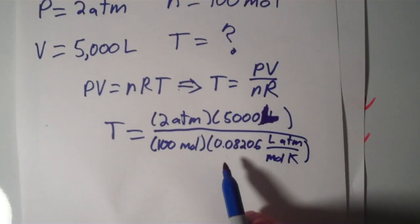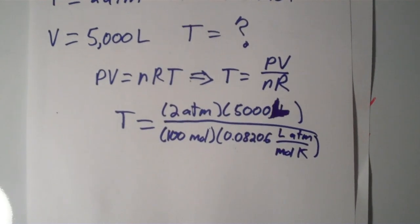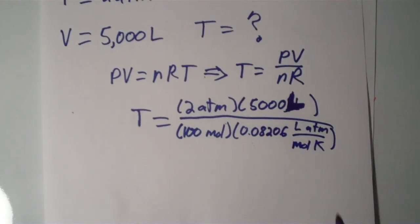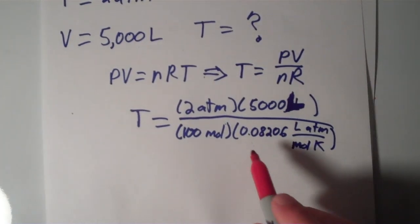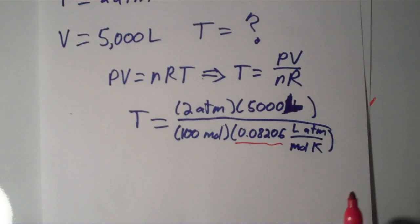So this value, 0.08206, that is the value of the gas constant if the units of the gas constant are liters times atmospheres over moles times kelvins. So a lot of people like to think that this is the value of the gas constant no matter what. But that's not necessarily true, you have to pay attention to what the units are.